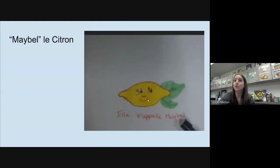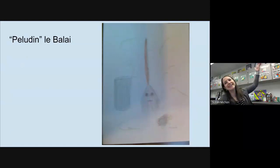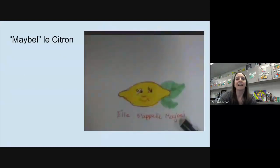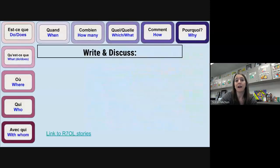Il y a Péludin — Péludin le balai. It's very pretty when it's pronounced correctly. Et Mabel le citron. Just in case we can't tell — un citron looks like citrus, right? And it's yellow. So it is a lemon. Mabel le citron et Péludin le balai. So what we have to do now is figure out what Péludin and Mabel are all about.